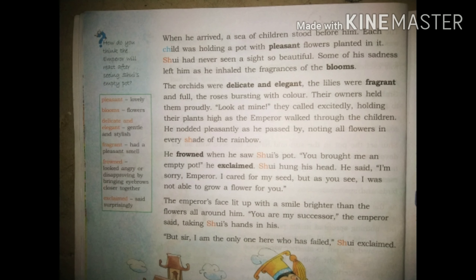When the day came and he arrived, a sea of children stood before him - so many children before him. Each child was holding a pot with pleasant, lovely flowers planted in it. Shui had never seen a sight so beautiful. Some of his sadness left him as he inhaled the fragrance of the blooms. The orchids were delicate and elegant - means very gentle and stylish. The lilies were fragrant - a sweet smell coming from the flowers. The roses were bursting with colors - very colorful. Their owners held them proudly, calling excitedly as the Emperor walked through the children.